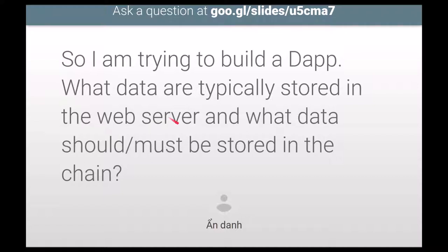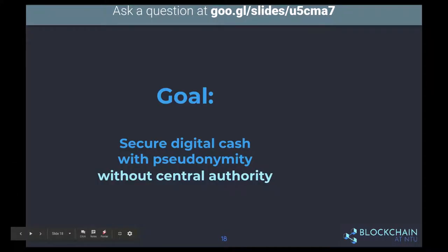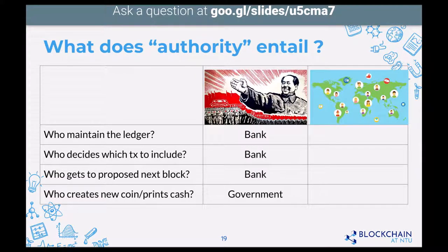Blockchain is a global database that everyone has access to. This question will make more sense when we cover smart contracts and application architectures in the next workshops. Now let's move on to solve the third line of our goal: how do we do this without central authorities? There are four relevant questions in the Bitcoin context: Who maintains the ledger? Who decides which transactions to include? Who gets to propose the next block? And who creates new coins?